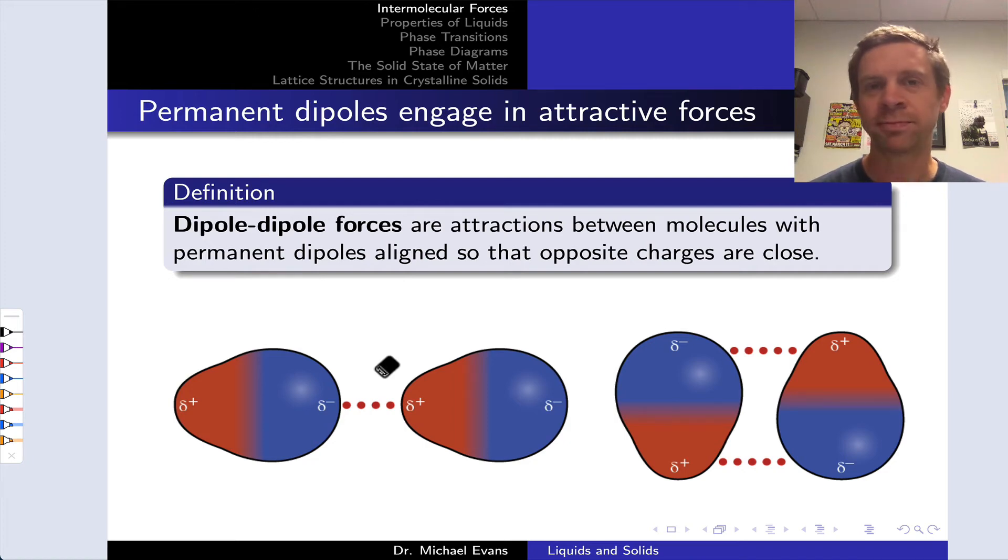Molecules that are polar, that have permanent non-zero dipole moments, have permanent regions of partial positive and negative charge within their structures.